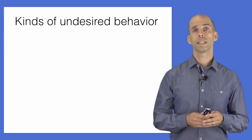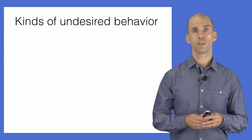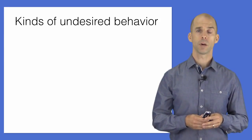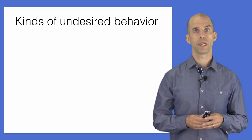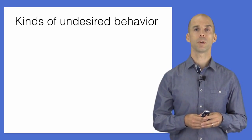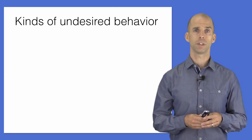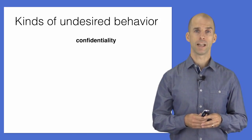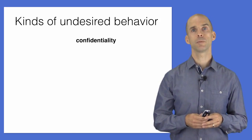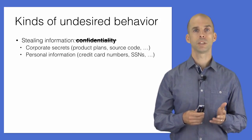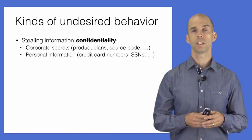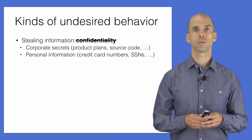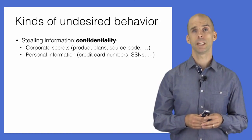There are three classic security properties that systems usually attempt to satisfy. Violations of these properties constitute undesirable behavior. These are broad properties; different systems will have specific instances depending on what the system does. The first property is confidentiality. If an attacker is able to manipulate the system to steal resources or information, such as personal attributes or corporate secrets, then he has violated confidentiality.